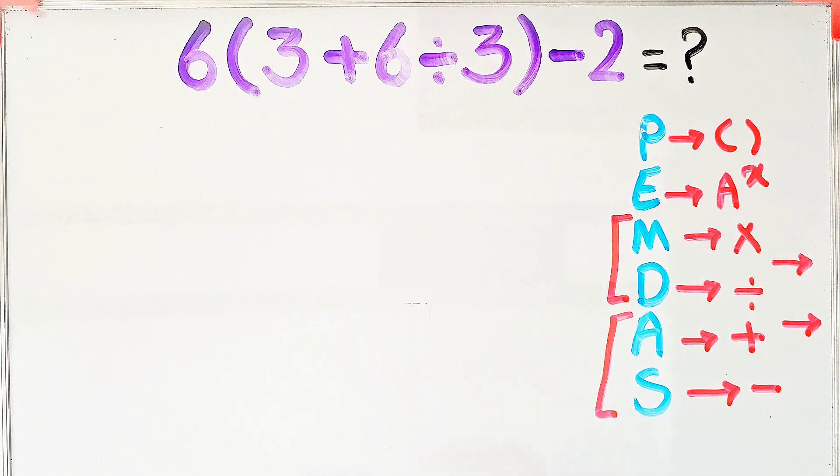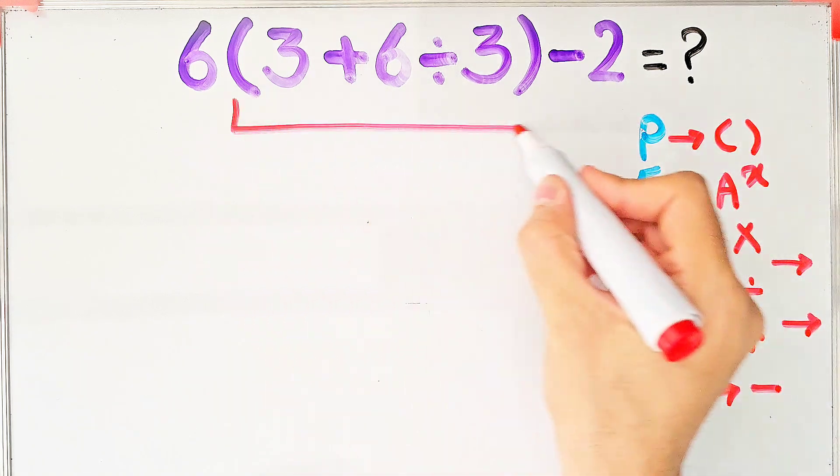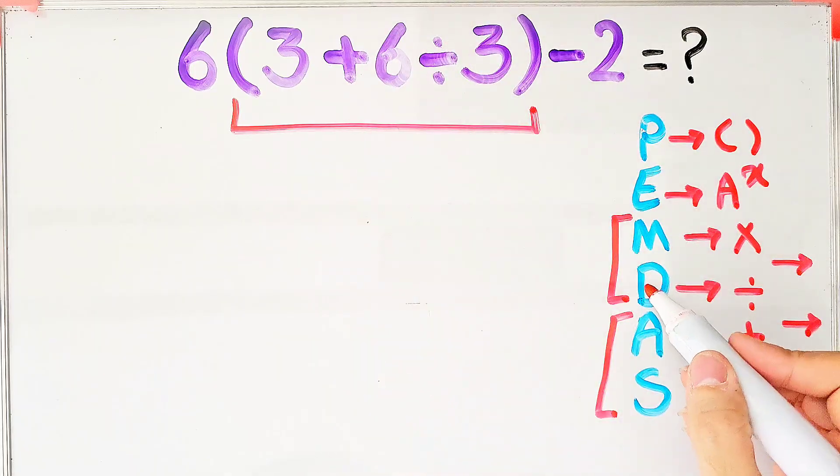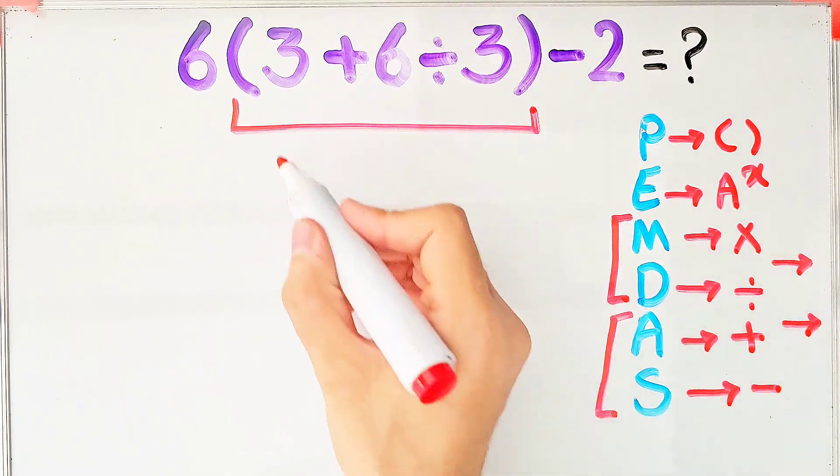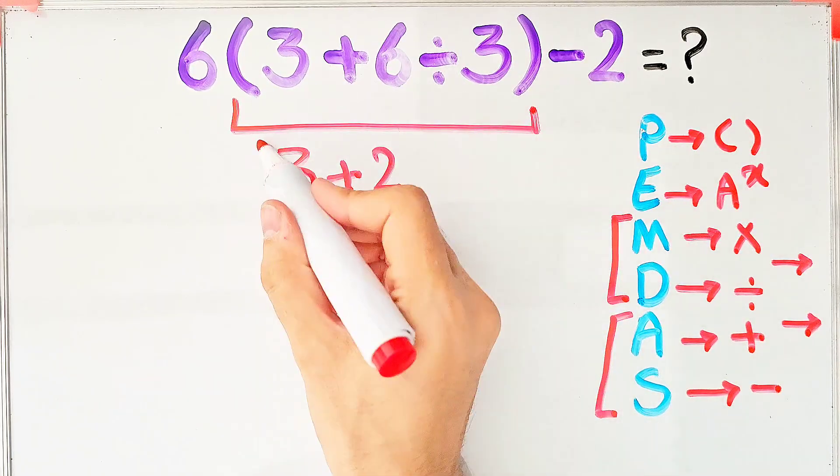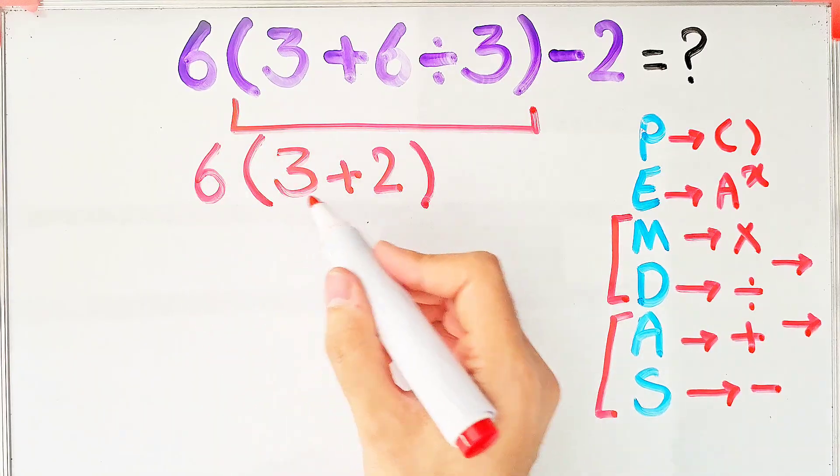According to the PEMDAS rule, first we simplify the parenthesis. Inside the parenthesis, we have addition and division. First we do division because division has higher priority than addition. We have 3 plus 6 divided by 3 that equals 2. And the question is 6 times 3 plus 2 then minus 2.